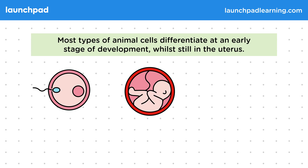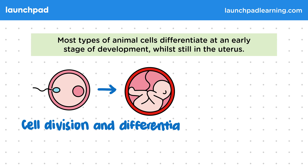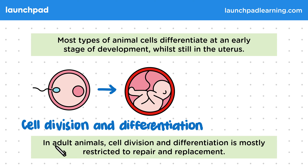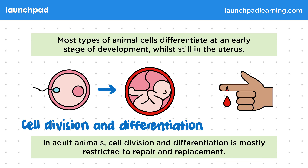Most types of animal cells differentiate at an early stage of development while still in the uterus. Cell differentiation takes place a few days after fertilization, which determines how the fetus is going to develop. In adult animals, cell division and differentiation is mostly restricted to repair and replacement. For example, when you cut yourself, your cells have to divide to heal it, and your bone marrow continually produces new blood cells.